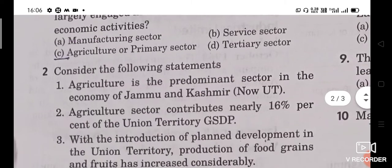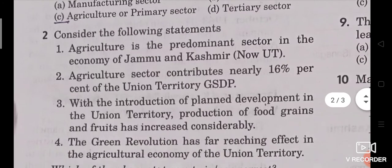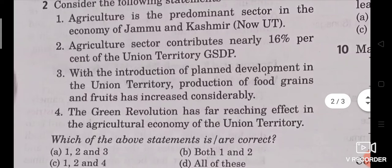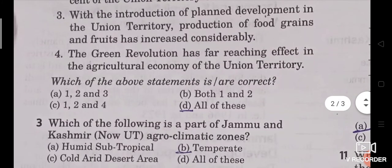Question 2: Consider the following statements. First, agriculture is the predominant sector in the economy of Jammu and Kashmir union territory. Second, the agriculture sector contributes nearly 16% of the union territory's GSDP. Third, with the introduction of plant development, production of food grains and fruits has increased considerably. Fourth, the green revolution has far-reaching effects on the agricultural economy. Which statements are correct? Answer: All of these.